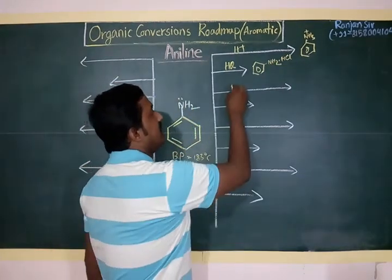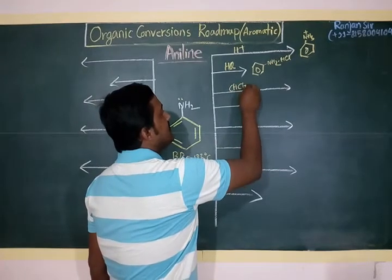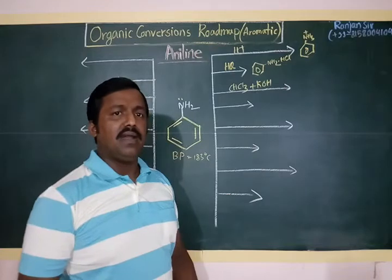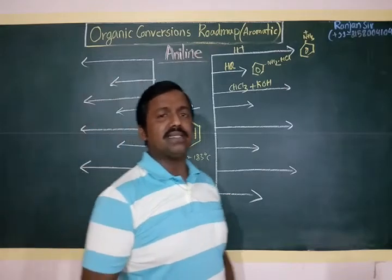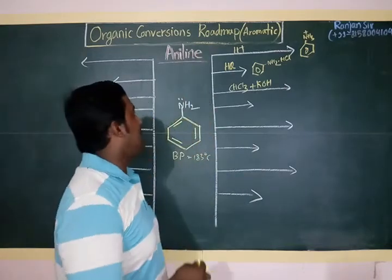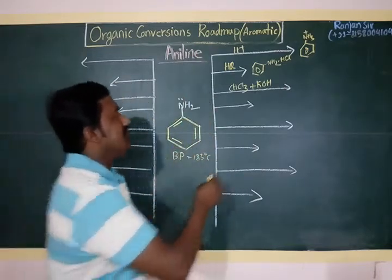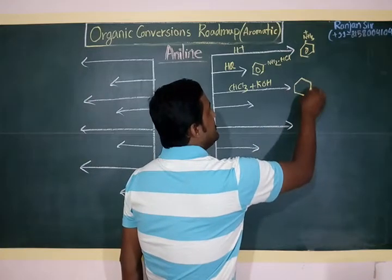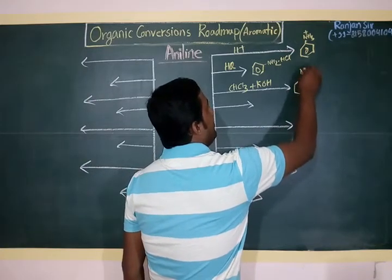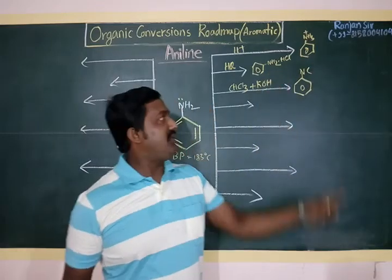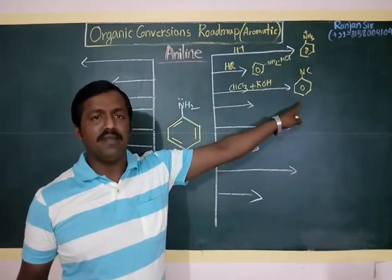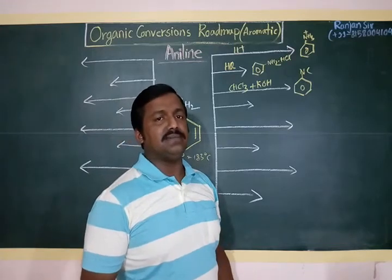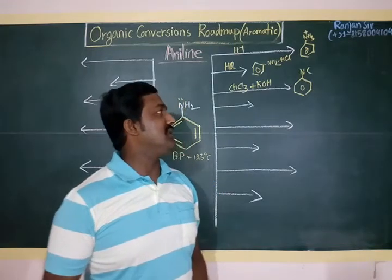One of the most important reactions of aniline is with chloroform and alkaline KOH medium. That is the carbylamine reaction. In the carbylamine reaction, aniline forms a compound with the isocyanide group (N≡C), and the product is called phenyl isocyanide. Phenyl isocyanide has a very foul smell.